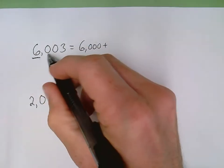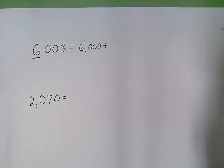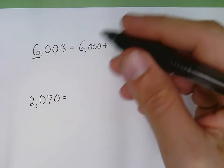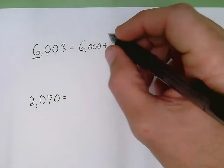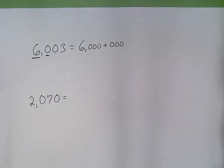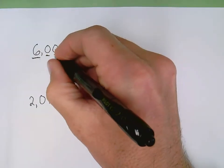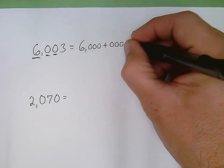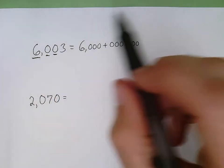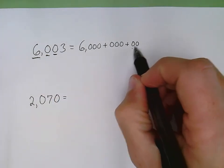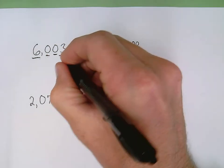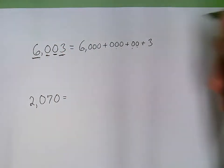I have two zeros here, and those zeros are worth nothing. I have a zero in the hundreds place, so that zero in the hundreds place is worth no hundreds, but I still want to write down three zeros here. The same thing with this zero in the tens place — I want to write down two zeros there, because a zero in the tens place is worth zero. I want to show that it's zero tens and zero hundreds. And then I write down the value of the three in the ones place, which is three.